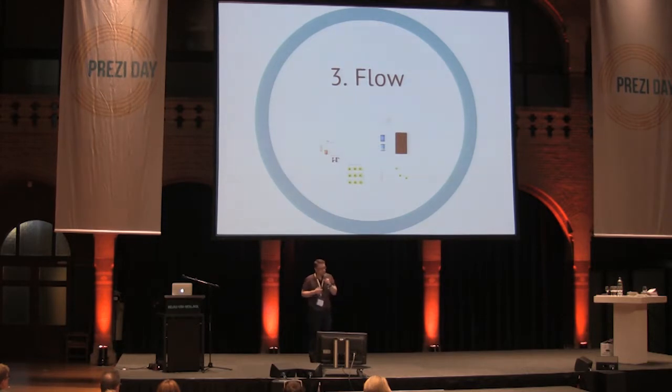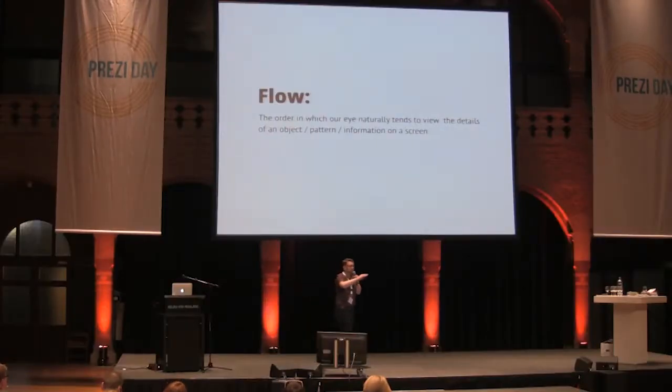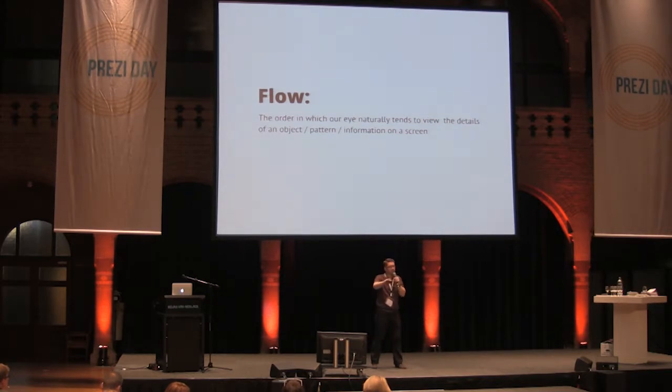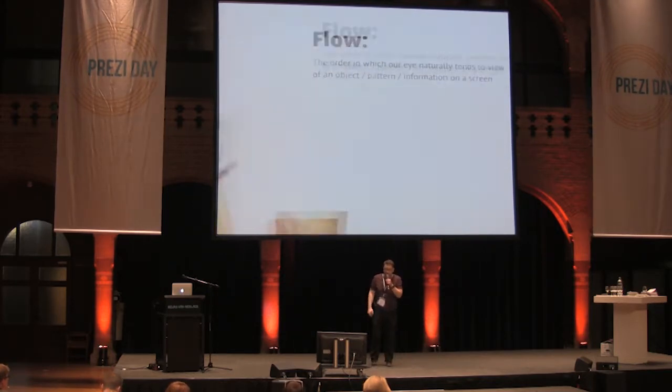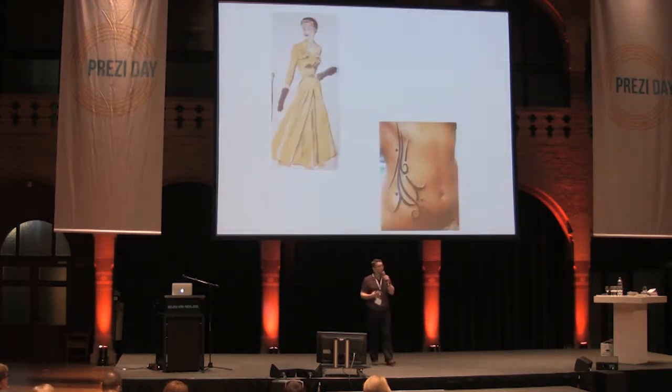The third thing that I think is very important for the overview is the flow of your presentation. What I mean by flow is the general direction that the eye naturally wants to see information, or a pattern, or an object on a screen. We see flow a lot in ladies' dresses — the dress will flow outward from the body — and we see it in tattoo designs.